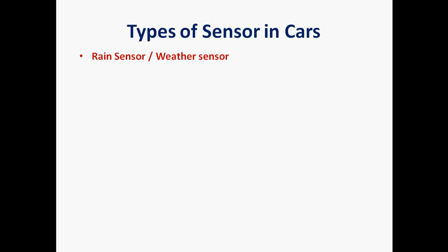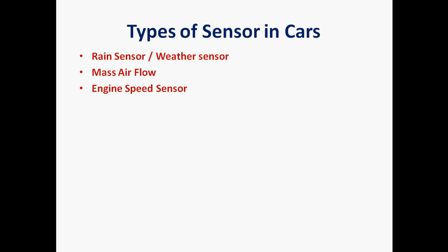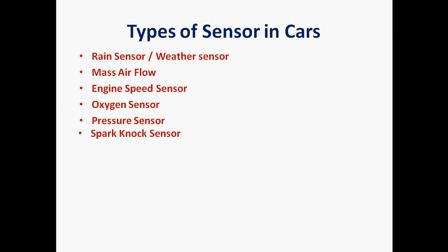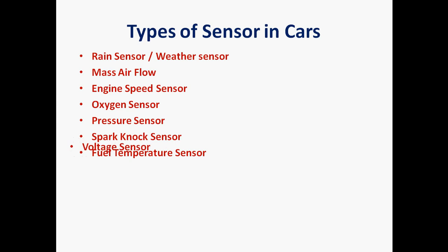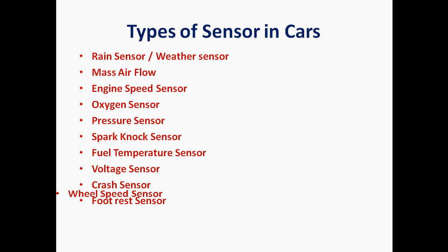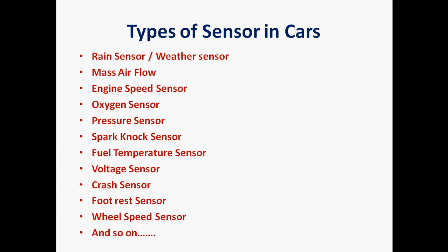The first is rain sensor or weather sensor, then mass airflow sensor — generally called MAF — then engine speed sensor, oxygen sensor, pressure sensor, spark knock sensor, fuel temperature sensor, voltage sensor, crash sensor, footrest sensor, wheel speed sensor, and so on. These are some of the sensors — it's not limited to this list.